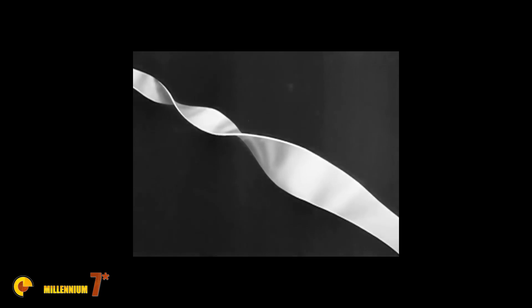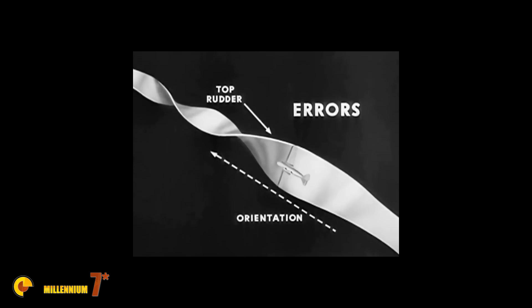In the half roll and reverse, common errors include failure to orient the roll around a definite point, failure to apply top rudder in the 90 degree position, and failure to hold the stick forward in the inverted position.